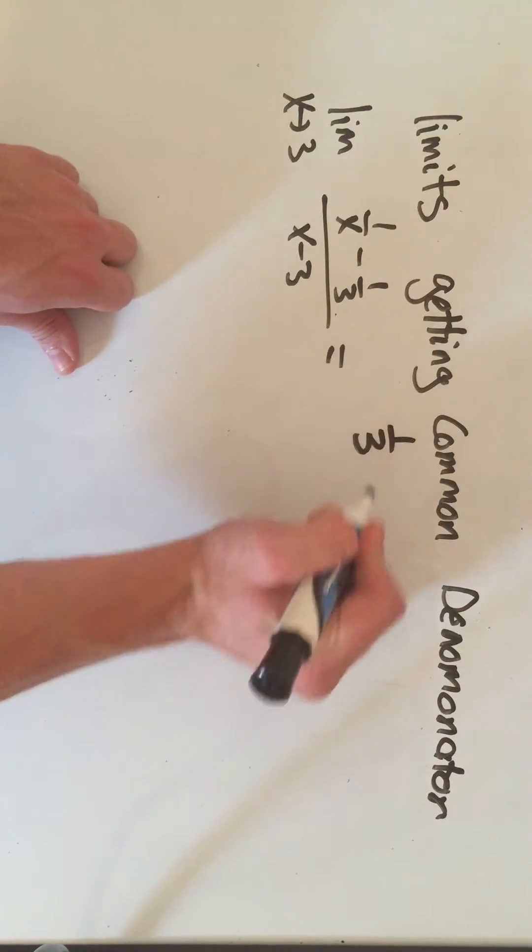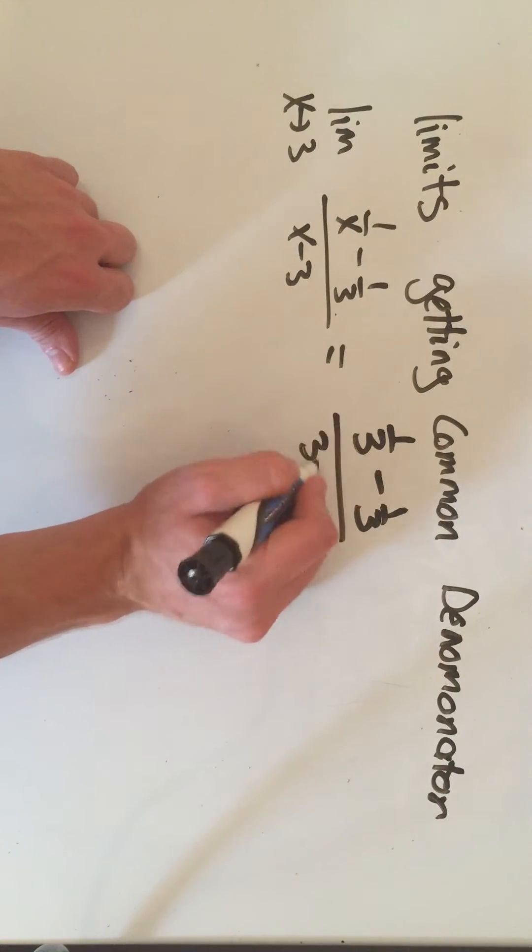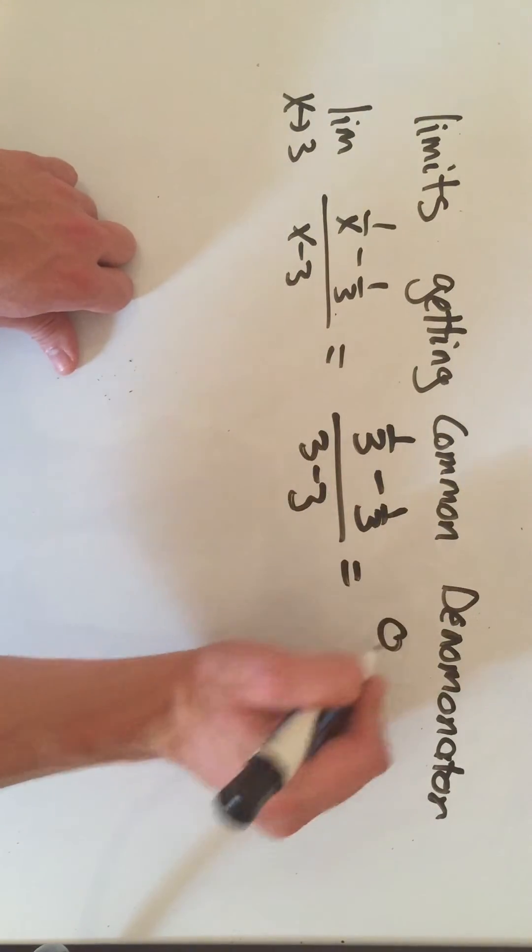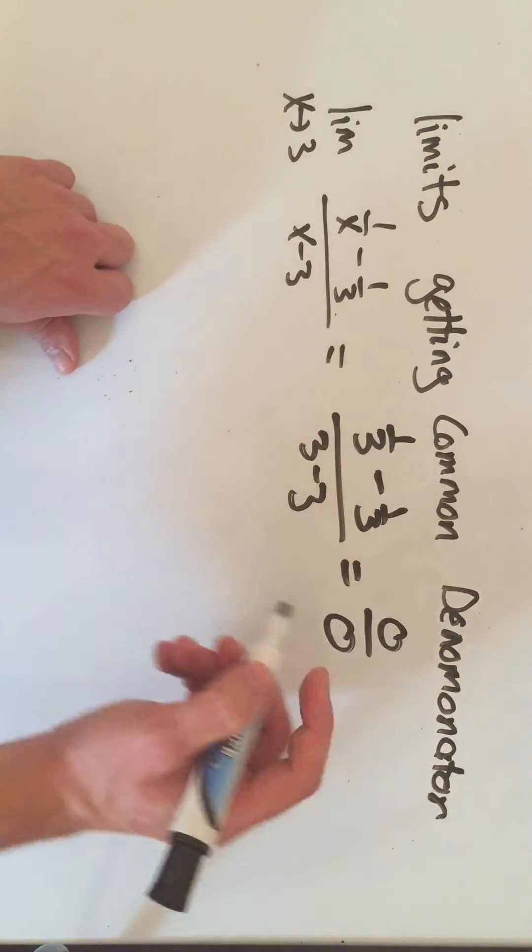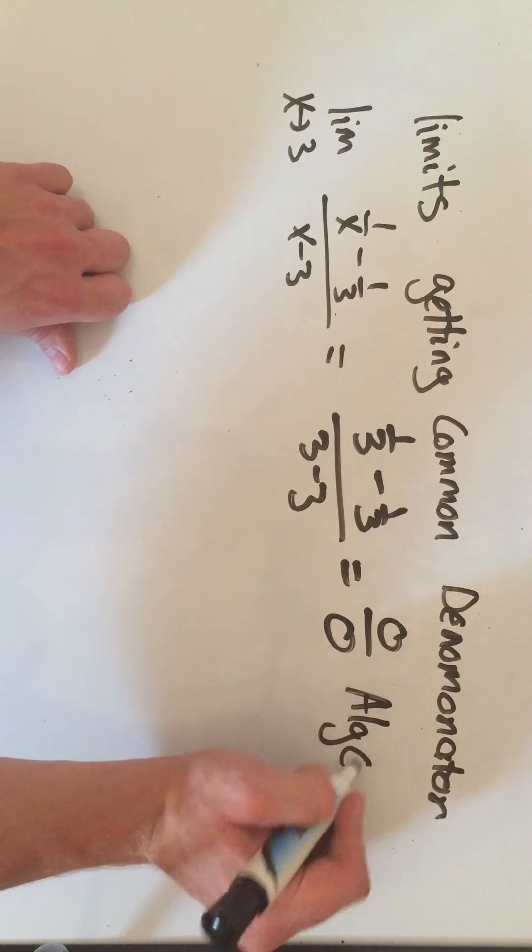So on the top, I'd get 1 third minus 1 third over 3 minus 3. That's going to be 0 on top, 0 on the bottom, 0 over 0. You know what that means? That means we have to do algebra.